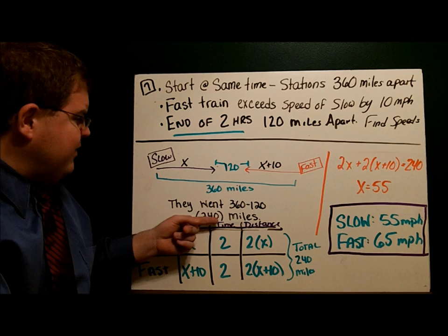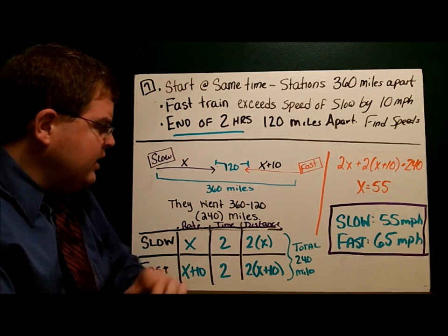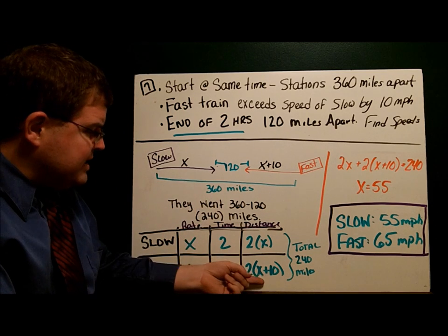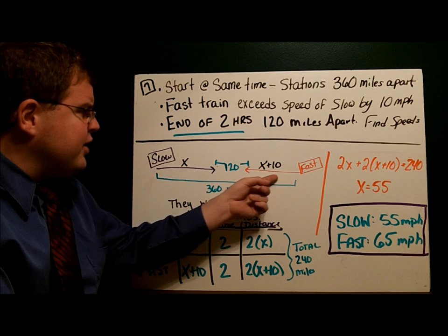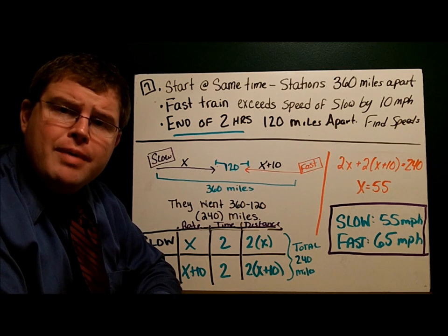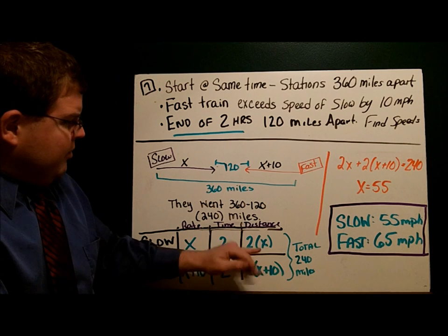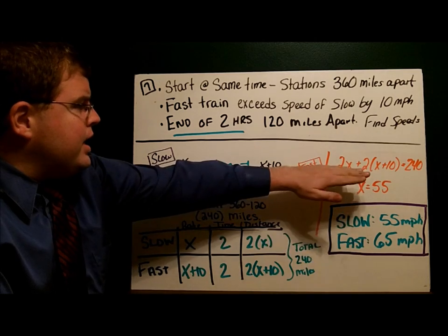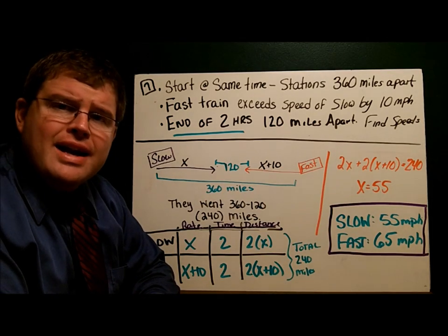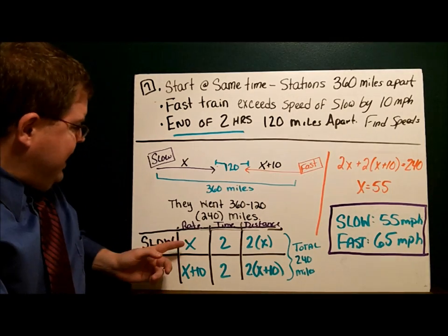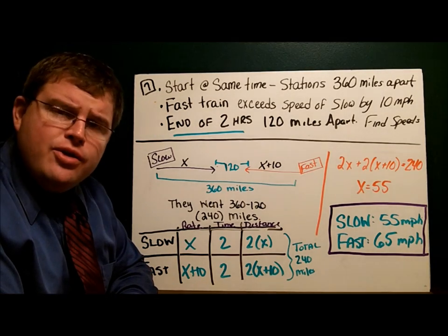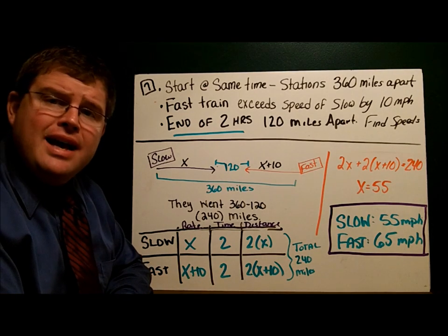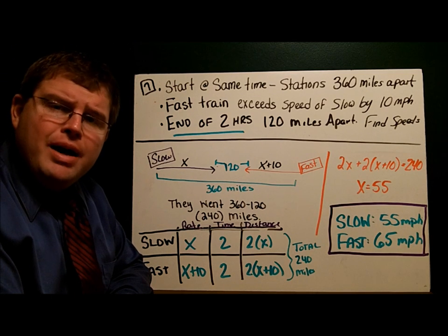The trains traveled a total of 240 miles. The distance the slow train traveled plus the distance the fast train traveled equals 240 miles total. So this plus this equals 240. Here's my equation: 2X + 2(X+10) = 240, and I get X equals 55. X is the rate of the slow train, so the slow train is going 55 miles per hour. The fast train is X plus 10, so it's going 65 miles per hour.